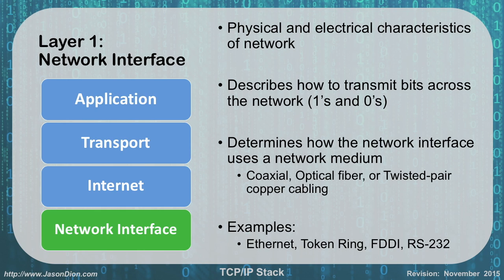Those are all ways that we can talk about a network interface. The other thing we deal with at the network interface layer is that old layer two data link stuff from the OSI model. So switching is handled here as well — MAC addresses and switching are all handled at the network interface layer. It's layer one and layer two: we're taking the physical and the logical and smashing them together.